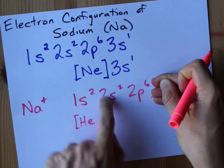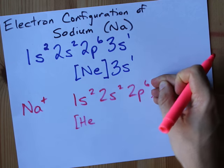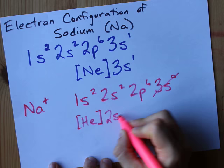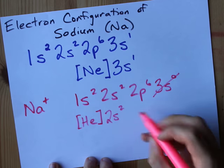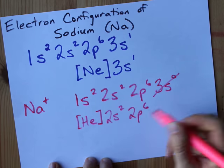You have to go back all the way to He and then mention that there's a 2s2 and a 2p6. Cool!